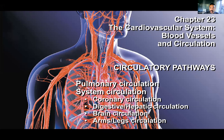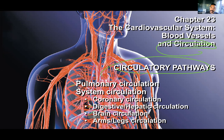Hey everyone, we are continuing chapter 23, specifically the slides on blood vessels and circulation, circulatory pathways. We've already gone over pulmonary, coronary, digestive, hepatic, brain, and hypophysial. Now we're going over arms, and then one more video we'll go over the legs, and one more after that we'll go over fetal. So a lot of different circulatory pathways. Let's go over the arm.